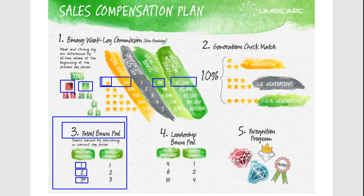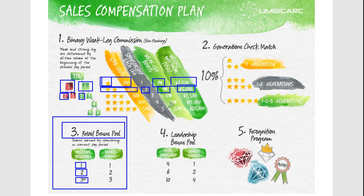When you get two personally sponsored customers on the right and two on the left, you become a Star 200. You'll get 9% of your weak leg and can make a maximum of $5,000. When you get three on each side, you get 10% of the weak leg up to $7,500 a week. Four personally sponsored on each leg gets you 11% up to $10,000 a week. And when you get five people personally sponsored on each side, you'll get 12% of everything on your weak leg, with a maximum of $20,000 US per week.